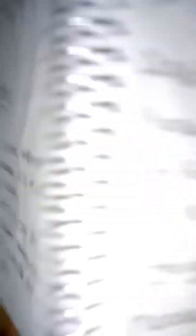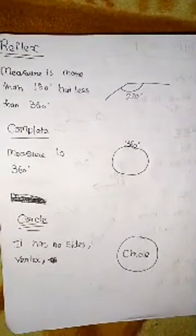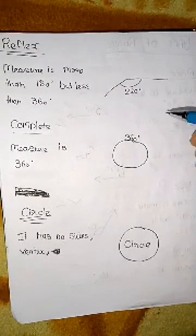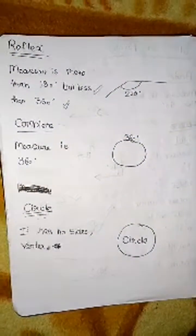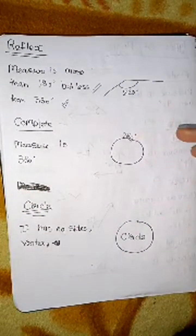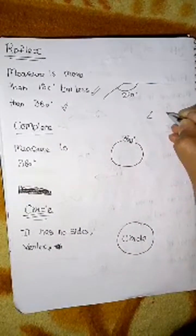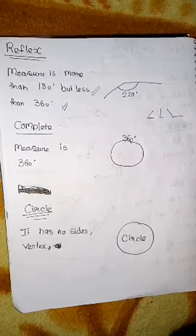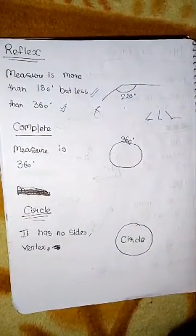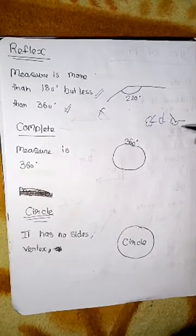Next we will be learning about two more angles: reflex and complete. Reflex angle is an important angle. Its measure is more than 180 degrees but less than 360 degrees. It is formed like this. Remember, we have learned acute, right, and obtuse. The outer portion of each of those angles will be named as reflex.